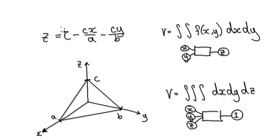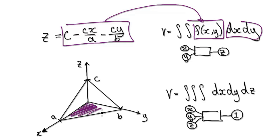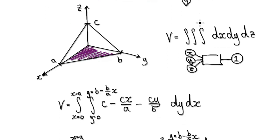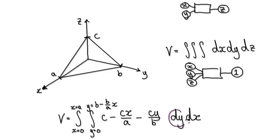We can now put this surface into here. This region here is this region here — we are interested in this region. Putting this into here takes us to here, and then to here, and then to here. So now dy —